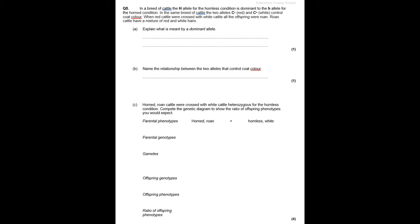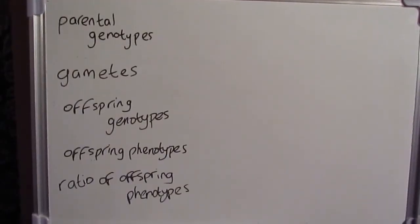Parental genotypes are the first thing that needs to be answered. The parental phenotypes are at the top. So if it's a horned roan that you are looking for, you go back to the information at the top of the page, at the top of the question, and a horned condition, we know we're looking for a lowercase h allele that needs to be in there.